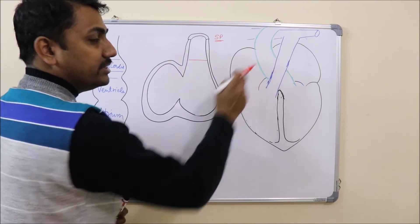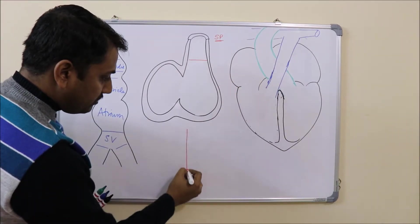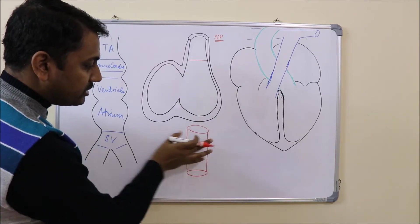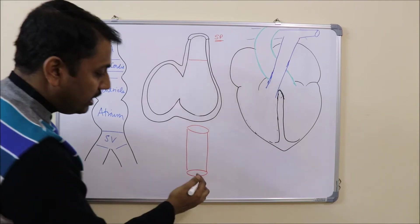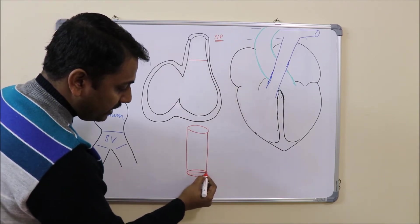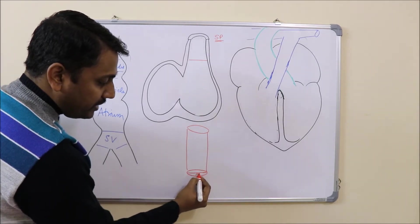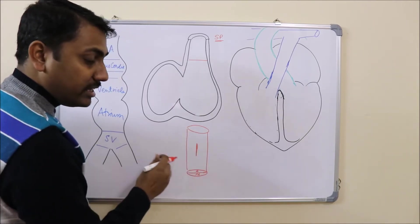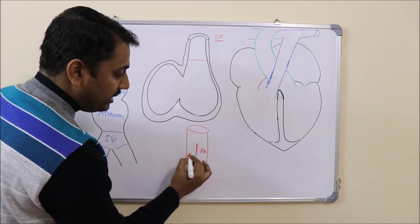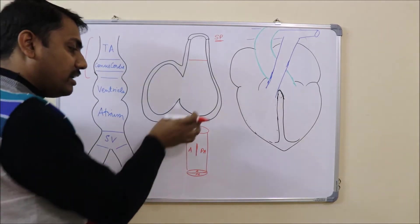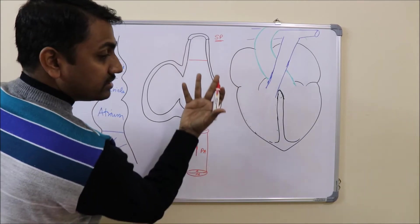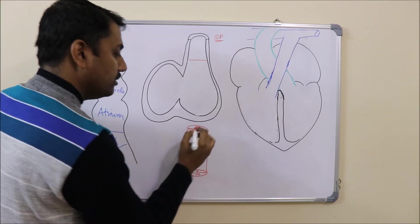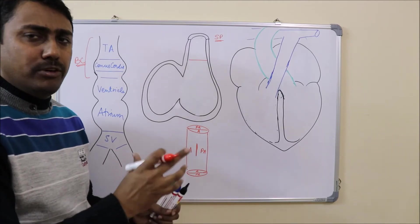This spiral septum will form the pulmonary artery and the aorta. The truncus arteriosus septum divides into two channels. If we cut at the lower level, the anterior channel will be the pulmonary artery and the posterior channel will be the aorta. In the middle the septum will lie such that toward the left will lie the pulmonary artery, and above it the aorta will again come to the front because the septum is spiraling — so the aorta comes in front and the pulmonary artery lies posterior.